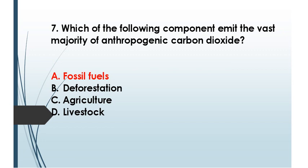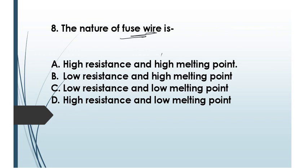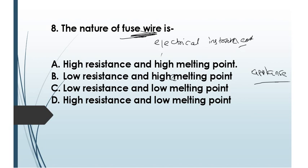Question number eight: the nature of a fuse wire. A fuse wire is an electrical instrument used to reduce damage to electrical appliances. It regulates high flow of current within a circuit. The nature of a fuse wire is that it has high resistance and low melting point.